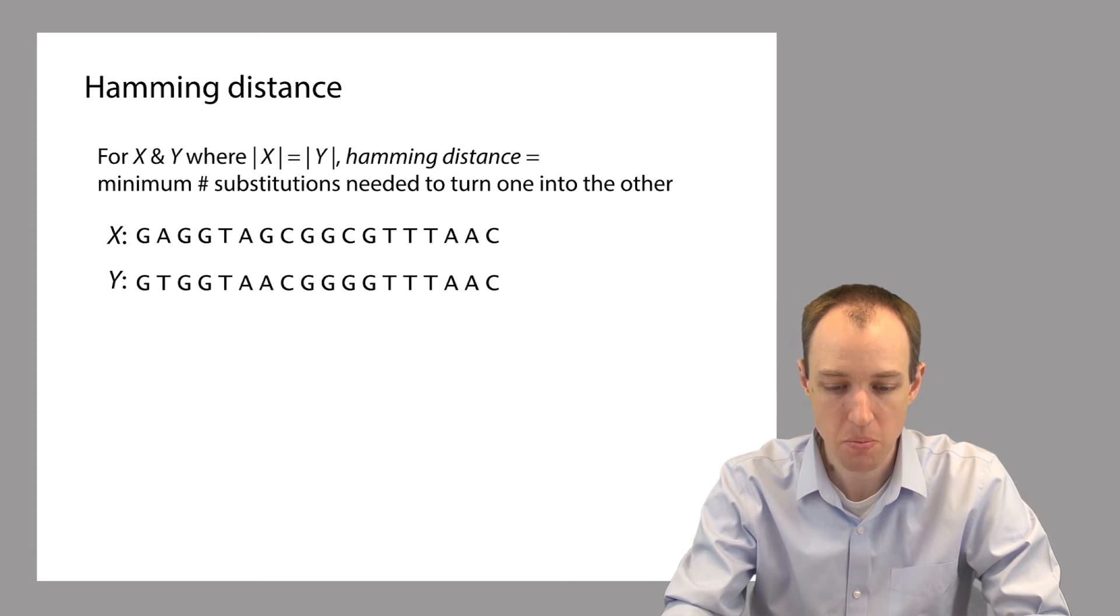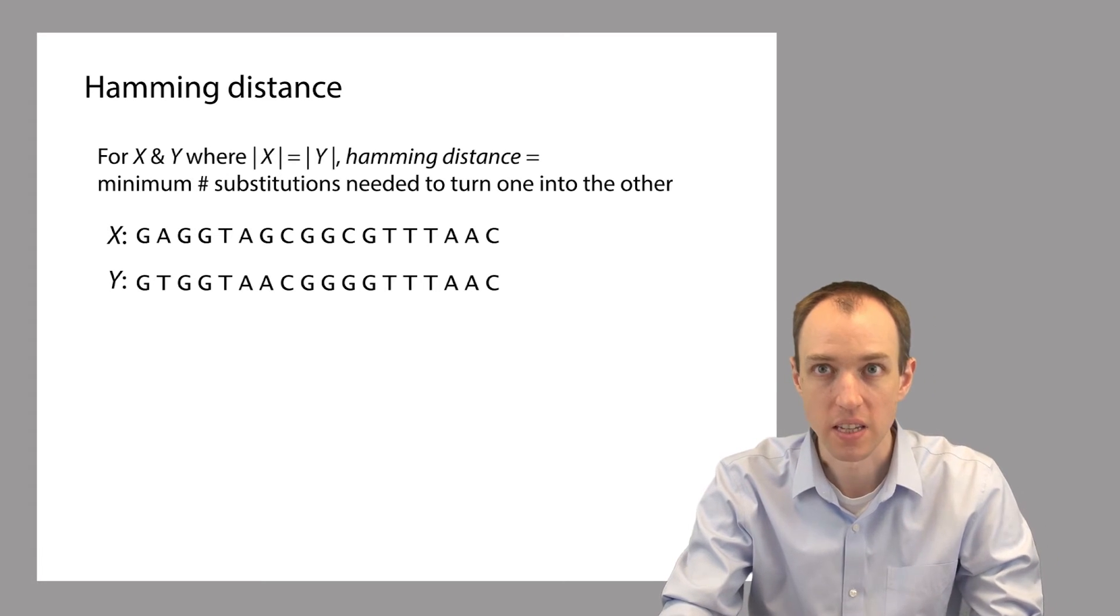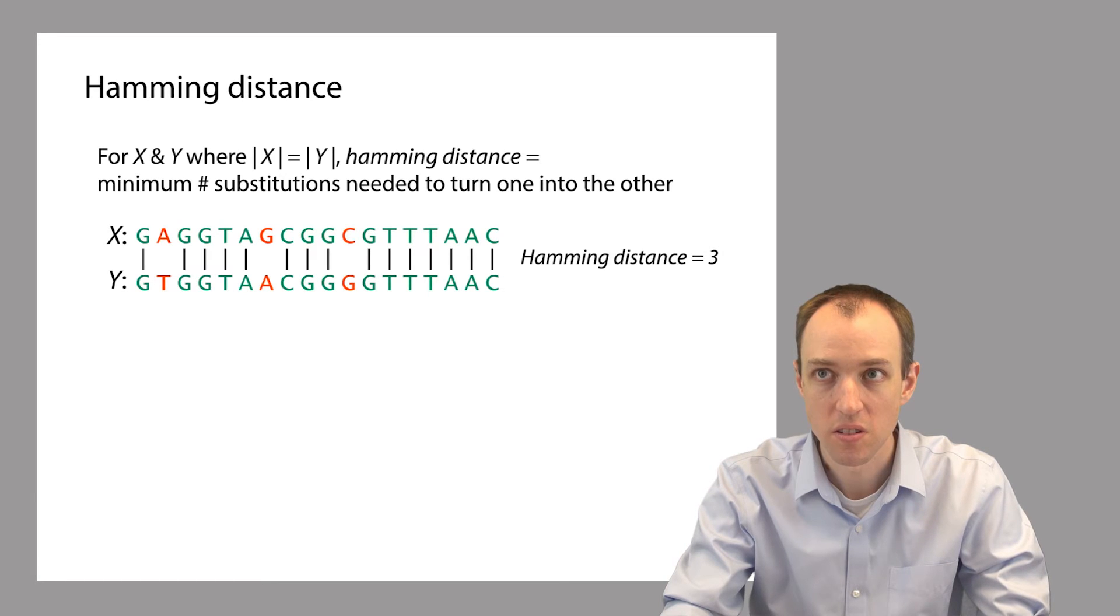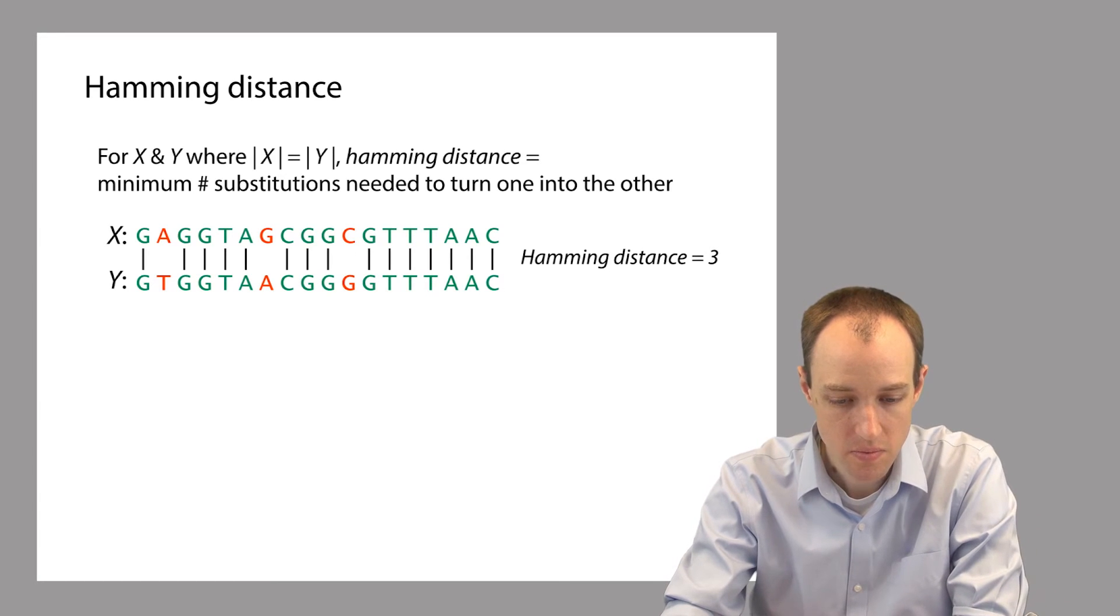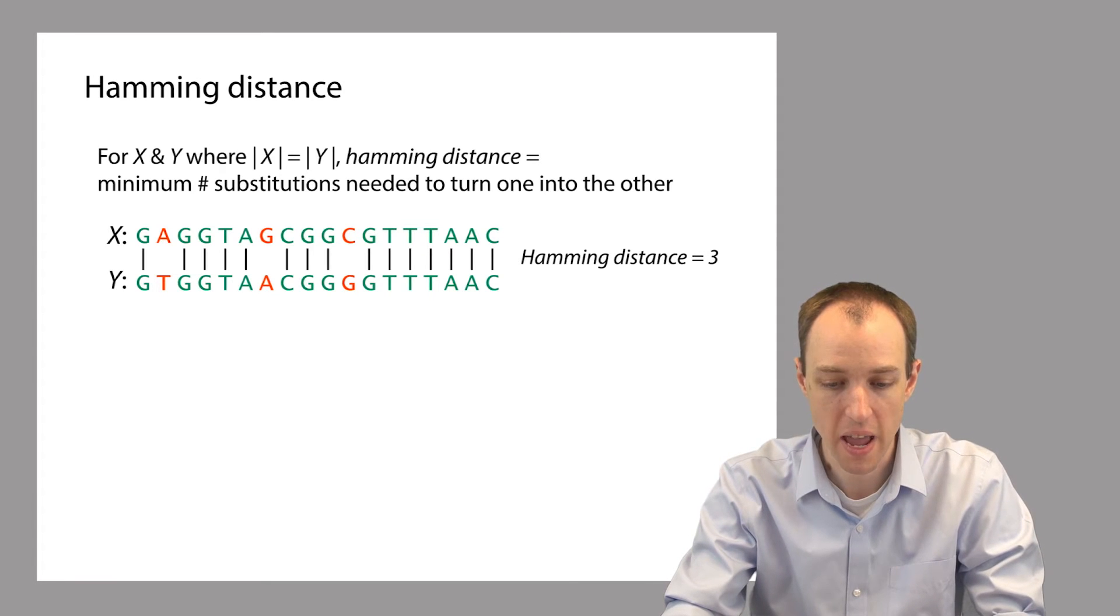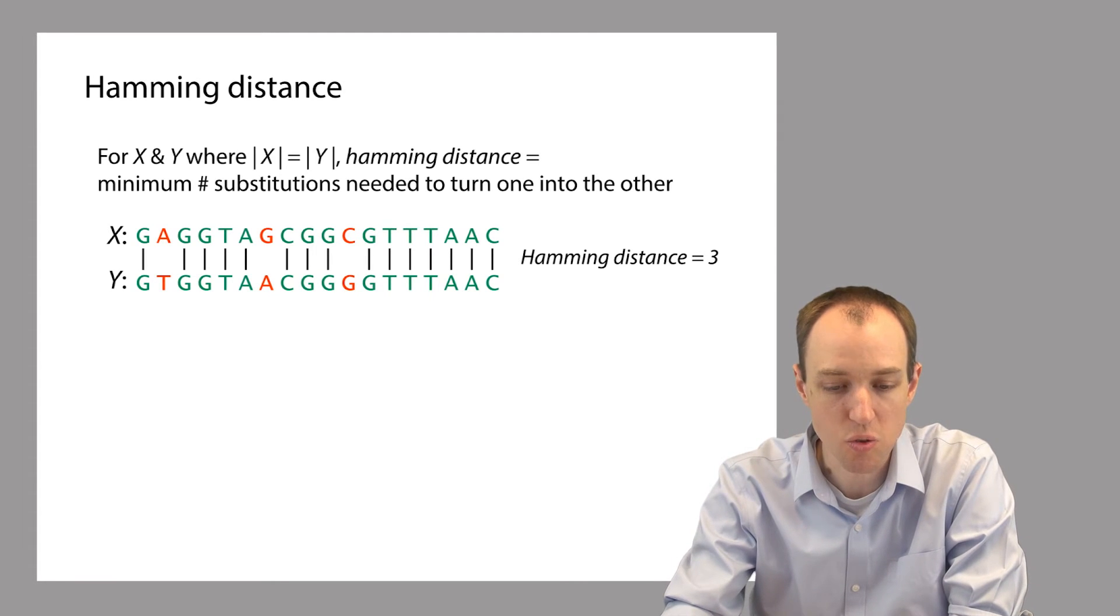So in this example, we would need one, two, three substitutions to turn x into y or vice versa. So we would say that there's a Hamming distance of three between these two strings.